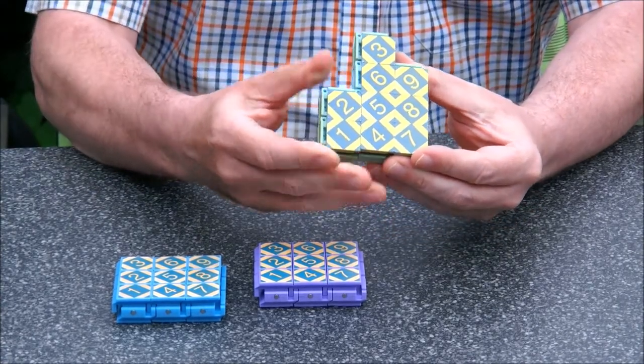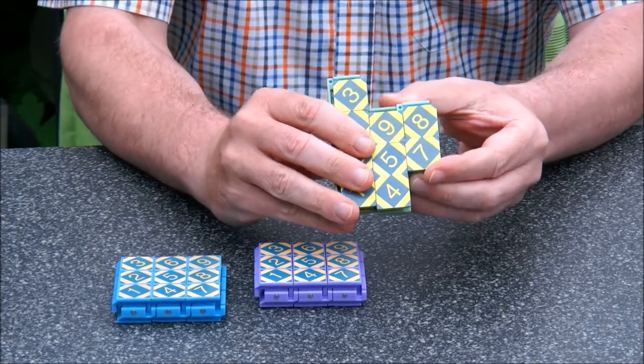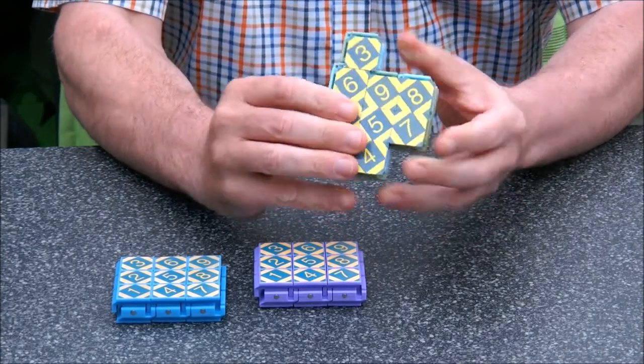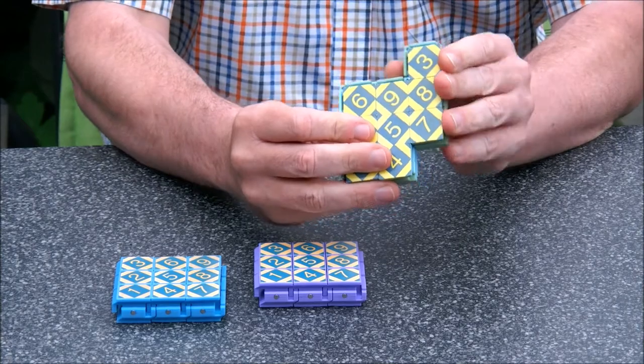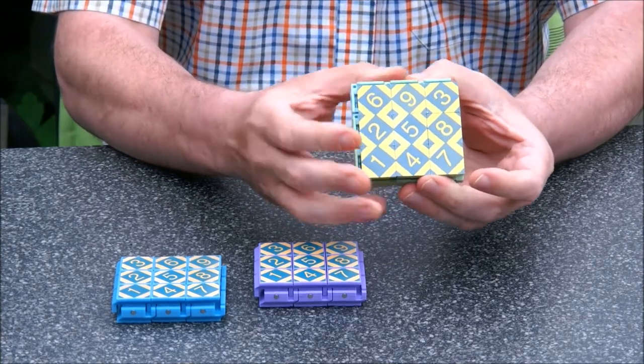It's some squares that move around. And the object of the puzzle is to scramble it and to move the squares around. And then, once you have it scrambled, you solve it.